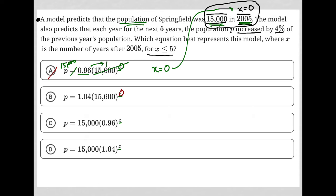For choice B, if I put 0 here, 15,000 to the 0 is 1, so that's out. For choice C, I put 0 here, 0.96 to the 0 power is 1, so we do get 15,000. That's good.